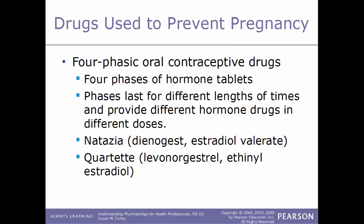Four-phasic drugs have four phases of hormone tablets, with phases lasting different lengths of time and providing different hormone drugs in different doses. Examples of four-phasic drugs include Natazia, which is a combination of dienogest and estradiol valerate, and Quartette, which is a combination of levonorgestrel and ethinyl estradiol.